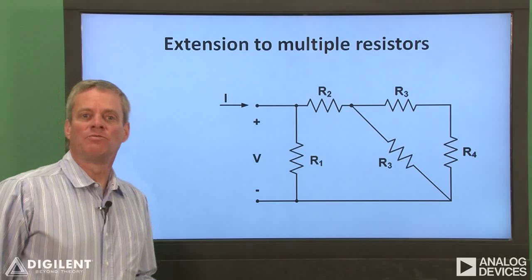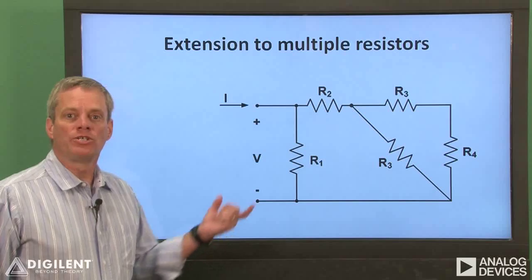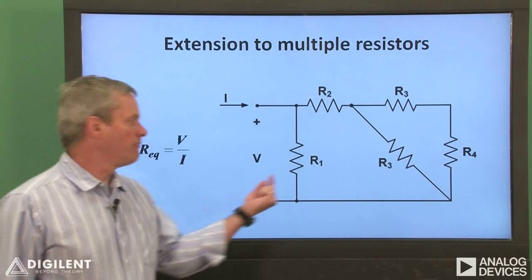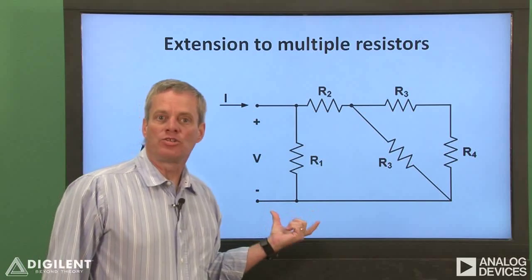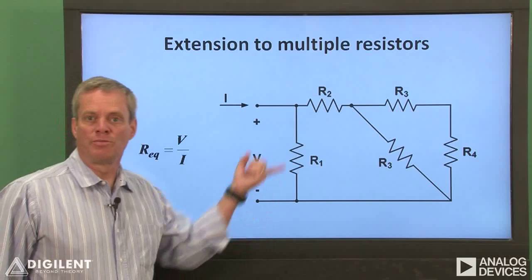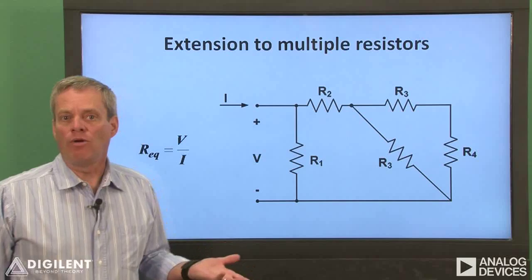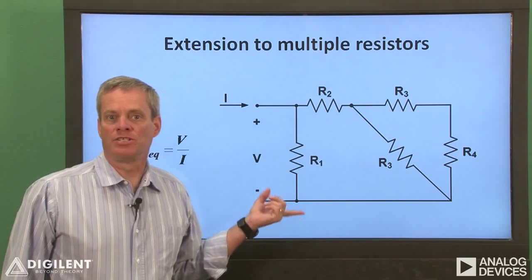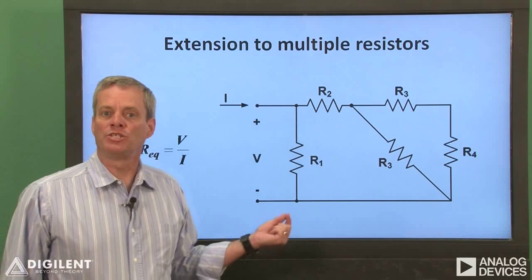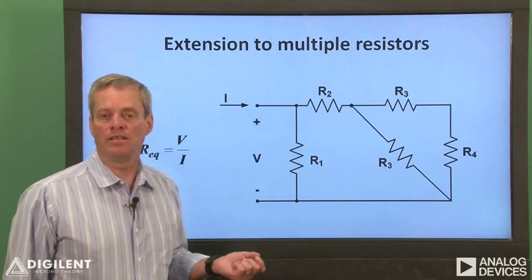This concept of resistance measurement from Chapter 1 is true for networks of resistors as well. For a circuit like this, the equivalent resistance is simply the relationship between voltage and current at the terminals of the network. Therefore, simply connecting an ohmmeter to the terminals of this network will give us a measurement of the equivalent resistance of the circuit. Likewise, if we apply power to the terminals of the circuit, the voltage and current at the terminals will provide us with the voltage-current characteristic of the overall circuit, which can be used to find the equivalent resistance.